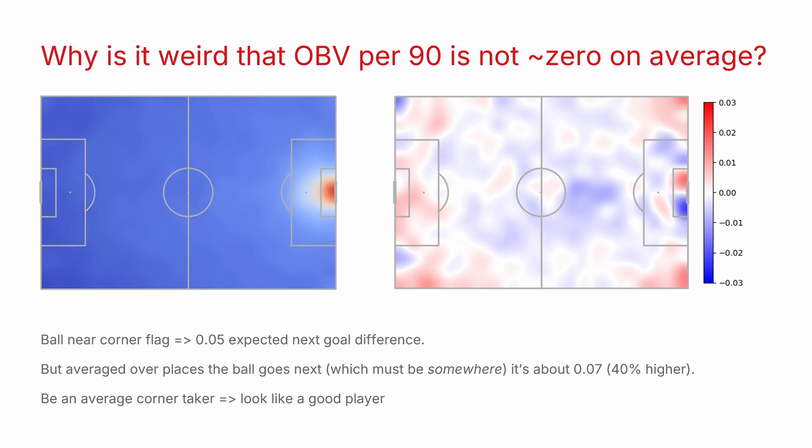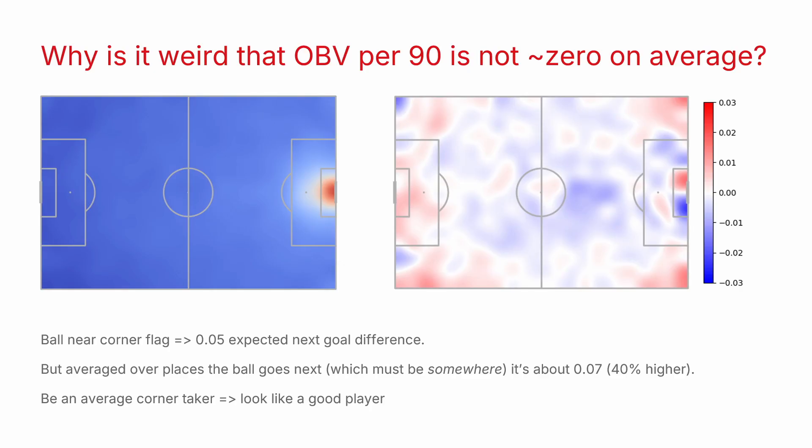The simplest way to explain what I've come up with is this is the simplest possession value model you can think of on the left. It's just try and predict the next goal difference given the pitch location. On the right hand side is the average action value you would get if you computed it in the normal way. So this is where the pass ends, this is the value there, and then you subtract the start value of that pass.